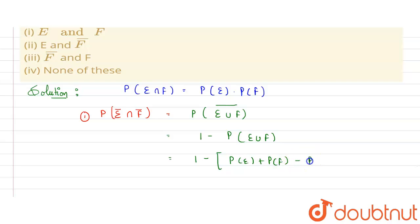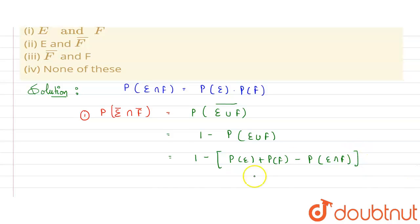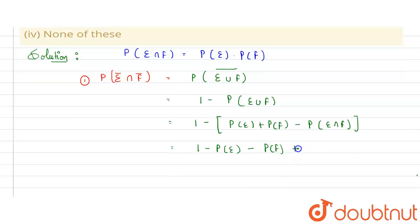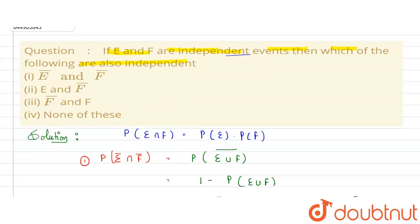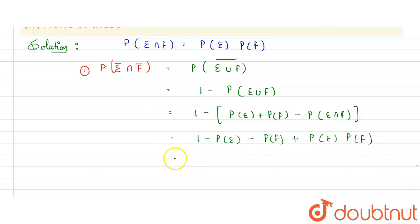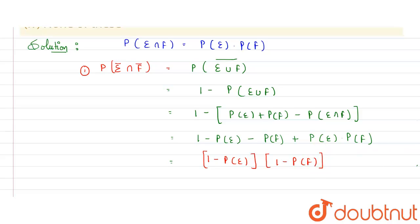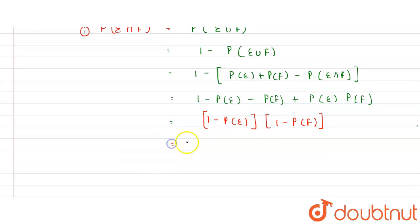Expanding using the union formula: one minus [P(E) + P(F) minus P(E ∩ F)]. Since E and F are independent, P(E ∩ F) = P(E)·P(F). This simplifies to one minus P(E) minus P(F) plus P(E)·P(F), which can be factored as (1 - P(E))(1 - P(F)).